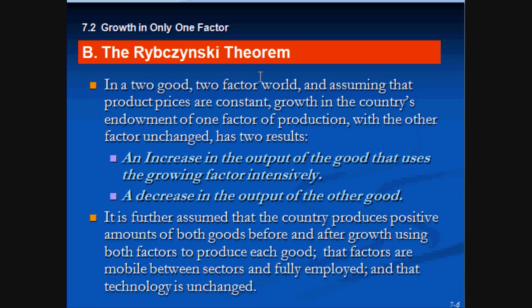The theorem further assumes that the country produces positive amounts of both goods before and after growth, using both factors to produce each good, that factors are mobile between sectors and fully employed, and that technology is unchanged — though that doesn't really happen in the real world.